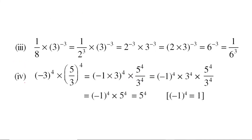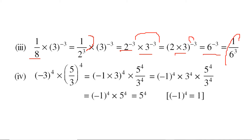Again, 1 by 8 into 3 to the power minus 3. This 8 is nothing but 2 cubed — take 2 cubed to the numerator. Now a and b have the same power, so a into b to the power minus 3 gives 6 to the power minus 3, which equals 1 by 6 to the power 3.